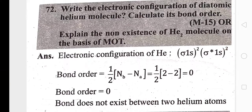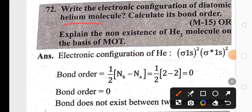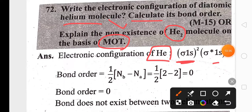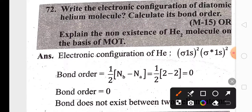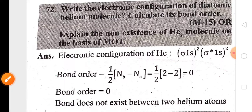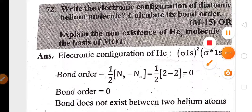An important question involves the electronic configuration of the helium molecule and calculating its bond order using Molecular Orbital Theory (MOT). The electronic configuration is σ1s² σ*1s². Bond order = ½(bonding electrons − antibonding electrons) = ½(2 − 2) = 0. Since bond order is zero, the helium molecule cannot exist — helium is monoatomic.